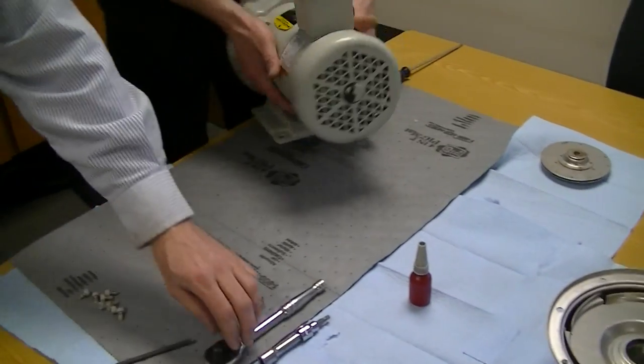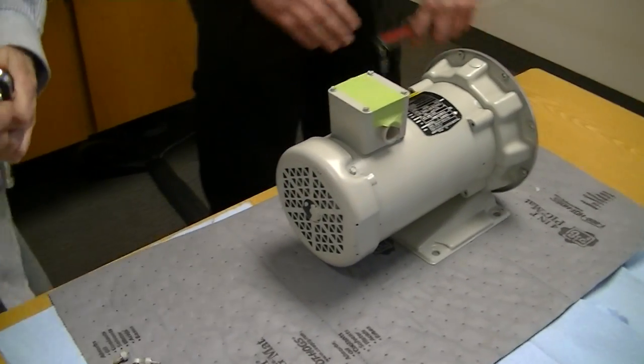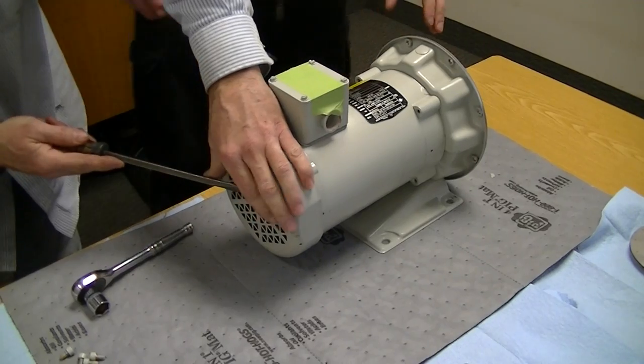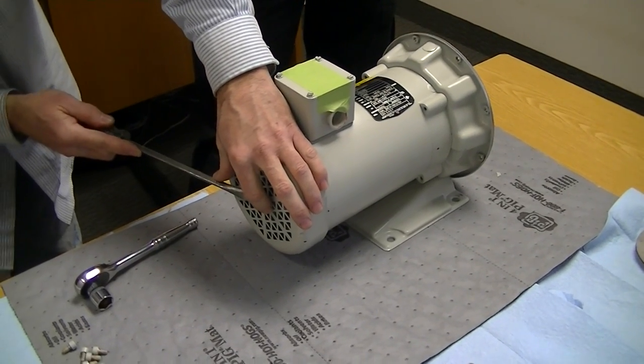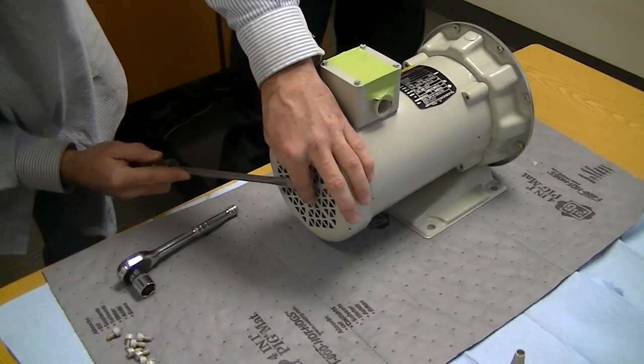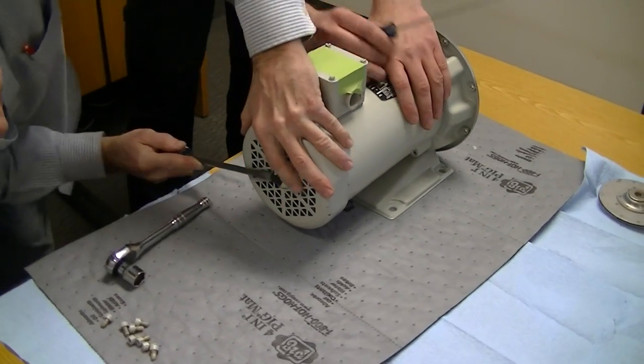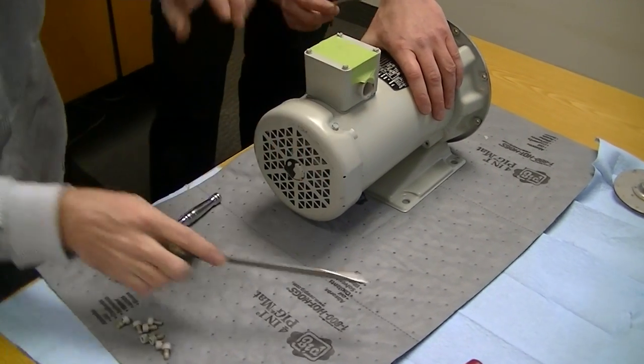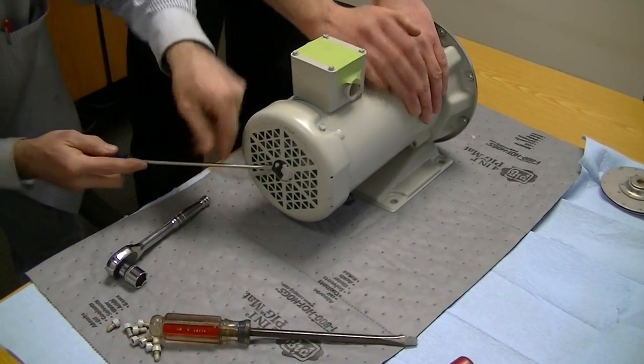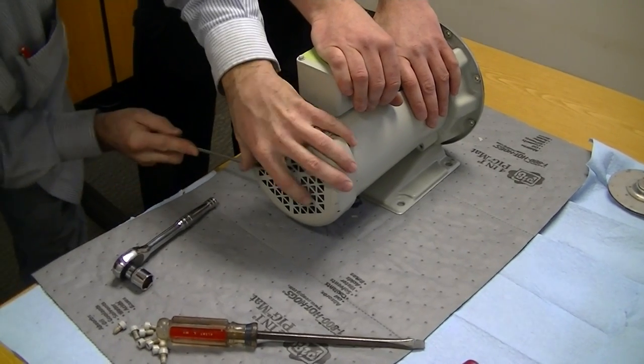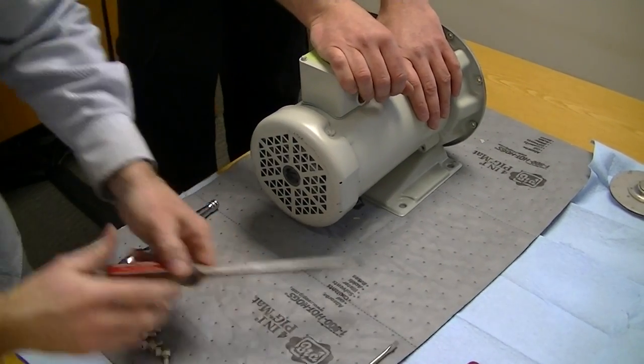Now we need a 5/8 wrench for the impeller, but we first have to take this cover off. This little plastic cover needs to come off so we can expose the back of the motor shaft.